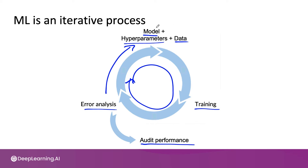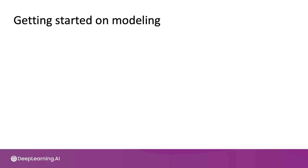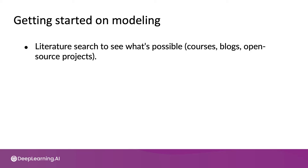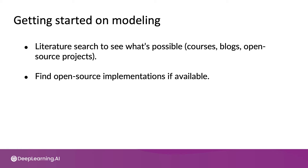In order to get started on this first step of coming up with a model, here are some suggestions. When I'm starting on a machine learning project, I almost always start with a quick literature search to see what's possible — look at online courses, blogs, open source projects. My advice, if your goal is to build a practical production system and not to do research, is don't obsess about finding the latest greatest algorithm. Instead, spend half a day, maybe a small number of days, reading blog posts and pick something reasonable that lets you get started quickly. If you can find an open source implementation, that can also help you establish a baseline more efficiently.